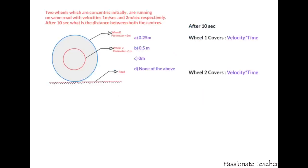Let's look at the statement of the problem once again. Wheel 1 perimeter is given as 2 meters, and wheel 2 perimeter is given as 1 meter. The velocity of the first wheel is 1 meter per second, and the velocity of the second wheel is 2 meters per second.